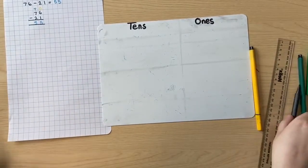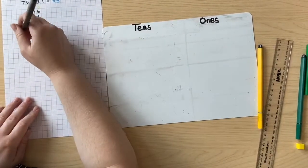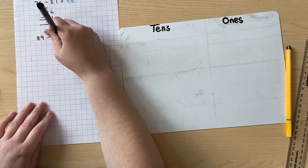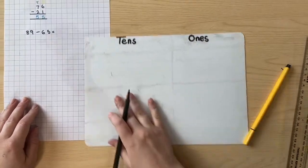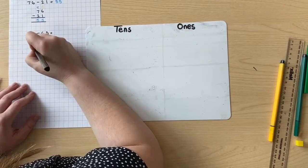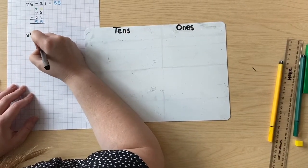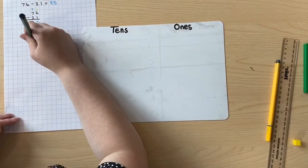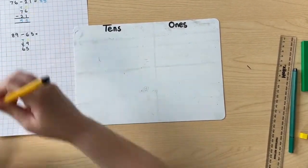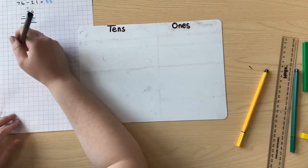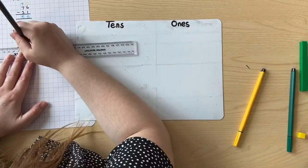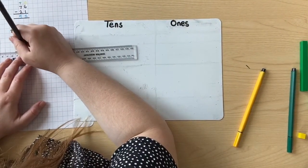Let's do another question. I'm going to do the question 89 take away 65. Let's write this question out — 89 and 65. We have to make sure they're in the right place value column, so we make sure our tens are in the right column and our ones are too. We're going to do subtraction and draw two lines underneath for our equals sign.